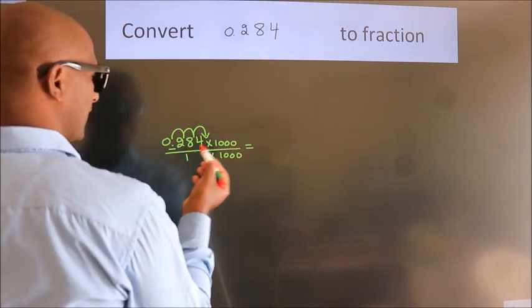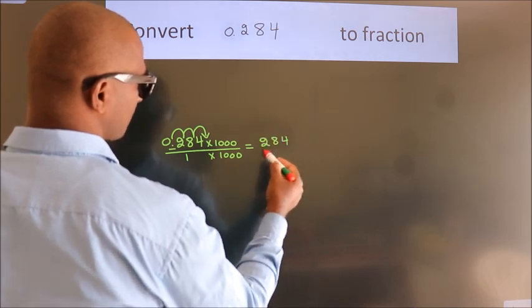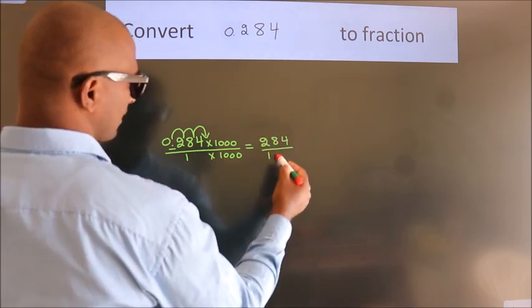0.284 into 1000 equals 284. 1 into 1000 equals 1000.